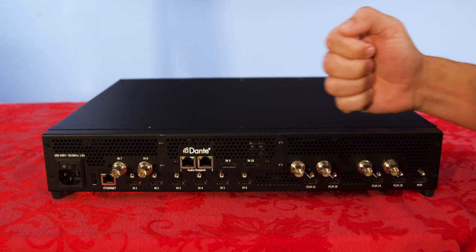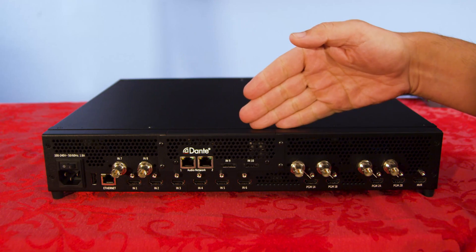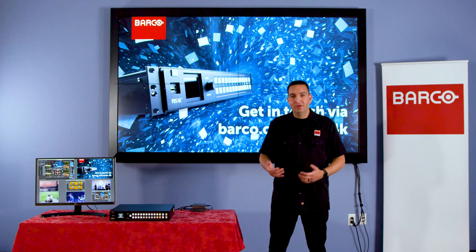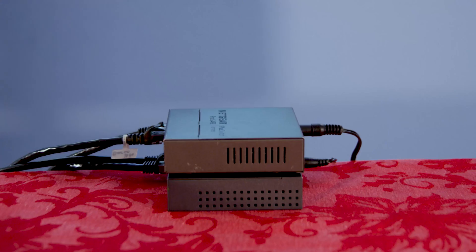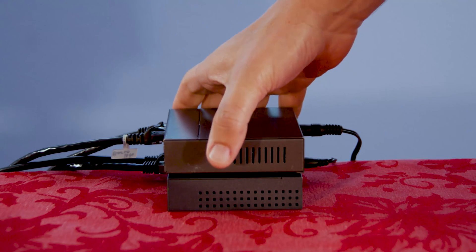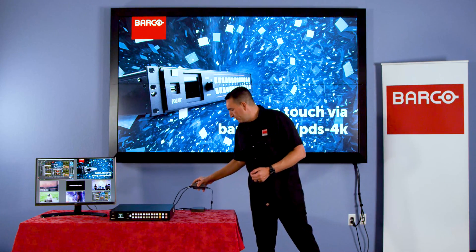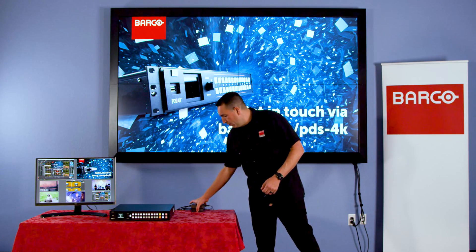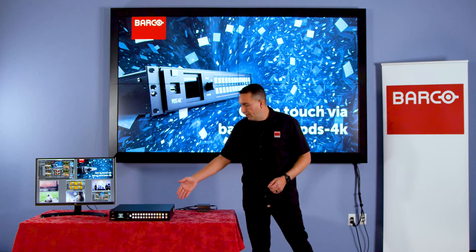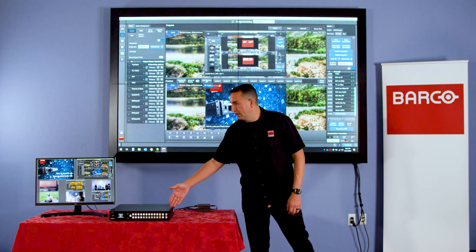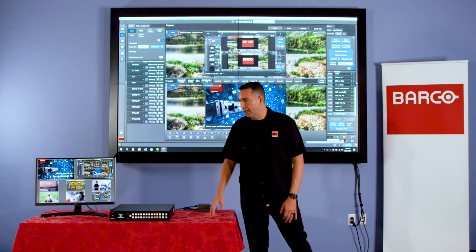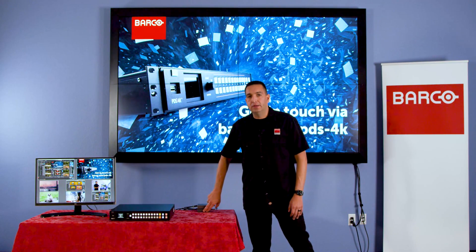The audio option card gives us two DP 1.2 inputs, allows us to route audio from an input to an output, and gives us Dante audio network functionality. Speaking of network, we recommend you utilize two different networks: one for the Dante audio network and one for the control network for the PDS 4K. Here we have one gigabit network switch for the Dante audio network and one gigabit switch for control, and Scott is off screen controlling the PDS 4K over the network.